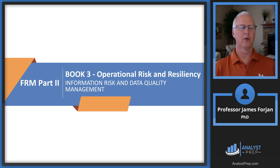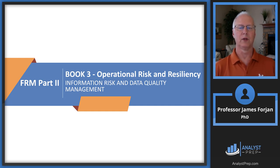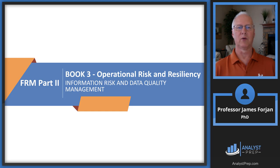This is FRM Part 2, Book 3, Operational Risk and Resiliency, and the chapter on Information Risk and Data Quality Management. One important note: this chapter is taken from a textbook written by two professors on Six Sigma, which is a model to improve operational efficiency. In particular, it has one of its general goals to minimize defects.